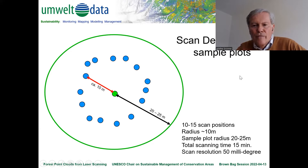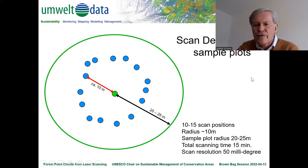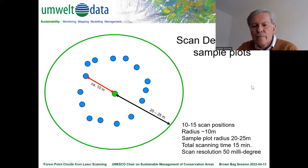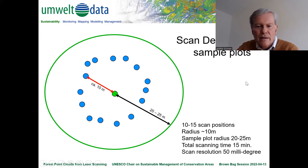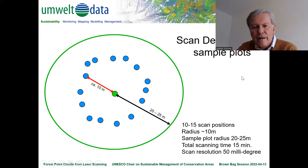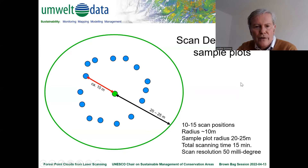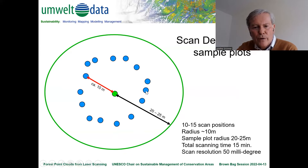For those familiar with the details of scan recordings: in this case we take a scan resolution of 5/50 millidegrees, meaning one degree is split into 20 scan points in every direction — so it's quite a dense point cloud. In the second step, you co-register the scan positions, marked here in blue, and you end up with a valid combined point cloud.